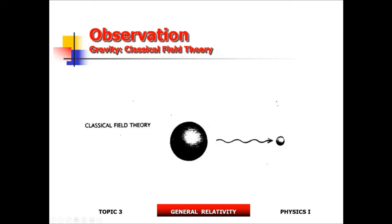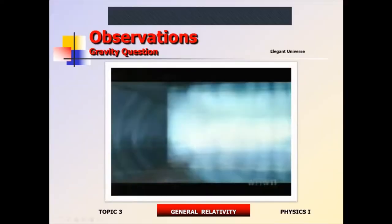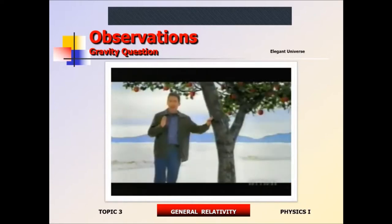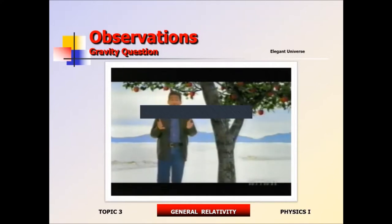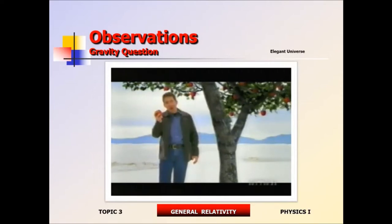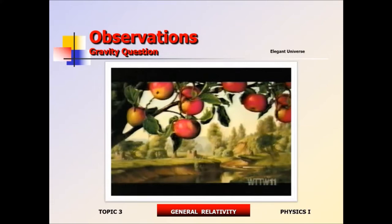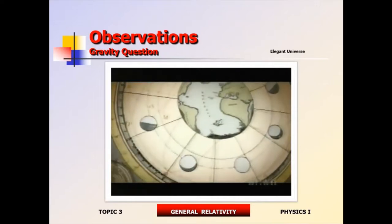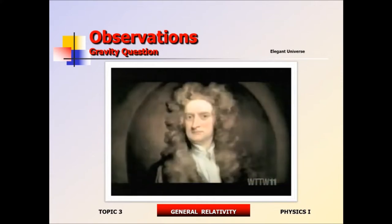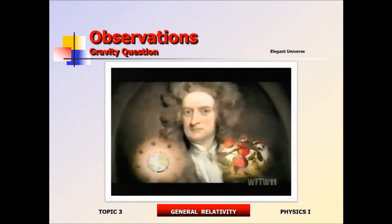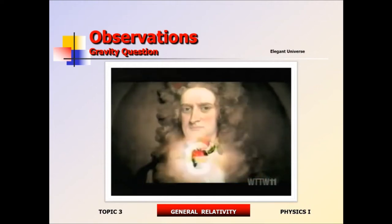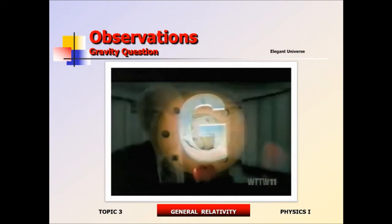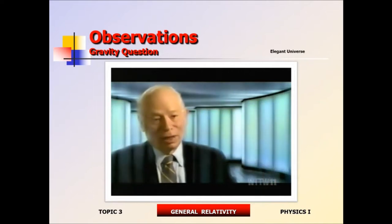Long before Einstein, the quest for unification began with the most famous accident in the history of science. In 1665, Isaac Newton saw an apple fall from a tree and proclaimed that the force pulling apples to the ground and the force keeping the moon in orbit were one and the same. In one fell swoop, Newton unified the heavens and the earth in a single theory he called gravity.